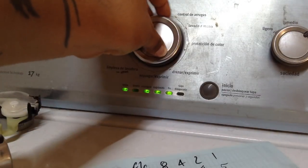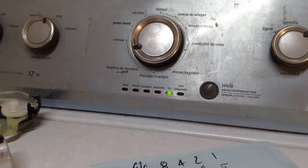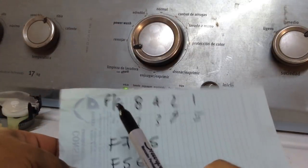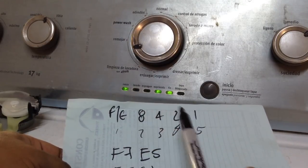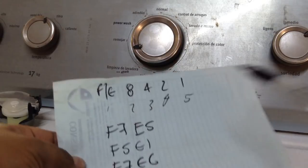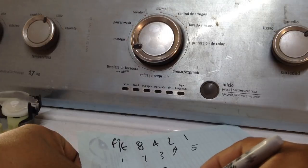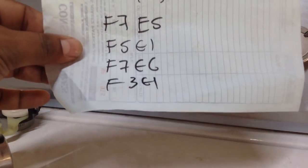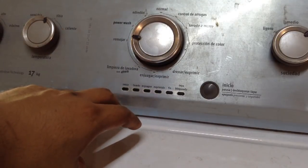Ahora vamos a ver si hay otro. Si tiene otro. Vaya, son 4 memorias, son 4 buffer y los 4 están llenos. Ese nos da F F3 E1. F3 que es 2 y 1, 3. E y el último 1. F3 E1. Ya tenemos 4 errores.